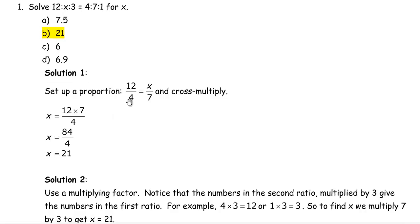For the first one, we're going to set this up as a proportion. One way to do this is you can write the first number over the first number here equals the second number in this ratio to the second number here. We don't need the 3 and the 1, as long as we use the 12 and the 4. So it's 12 over 4 equals x over 7.